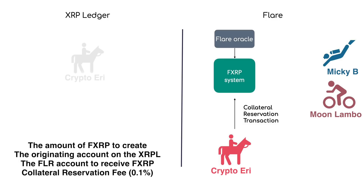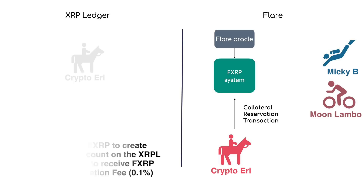Collateral needs to be reserved so that from the moment the collateral reservation transaction is finalised, there is 2.5 times the value of XRP being minted into FXRP locked in Spark tokens. A fee needs to be paid because if the originator, Eddy, doesn't complete the transaction, the collateral could instead have been used against a successful origination and the agents could have earned a creation fee.